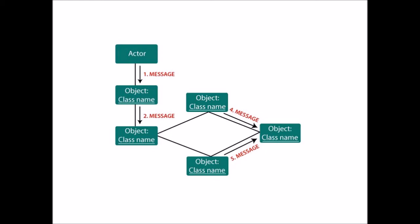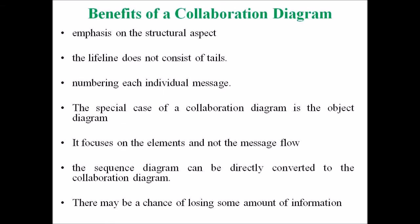That is, implementation of a collaboration diagram at an instance level if needed, and a specification level diagram may be made in the instance level sequence diagram for summarizing alternative situations. Next we deal with the benefits of a collaboration diagram. It is also known as a communication diagram. It mainly puts emphasis on the structural aspect of an interaction diagram — that is, how the lifelines are connected. The syntax of a collaboration diagram is similar to the sequence diagram, just the difference is that the lifeline does not consist of tails. Messages transmitted over sequencing are represented by numbering of each individual message.